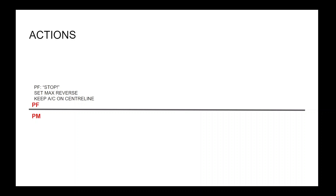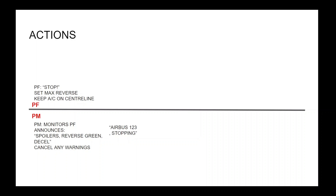The captain will announce 'stop', set max reverse, and keep the aircraft on the centreline. The PM will monitor the captain's actions and announce: spoilers, reverse green, D-cell, then cancel any warnings. Anything they don't see, they should also announce. The PM will then inform ATC: call sign, stopping.